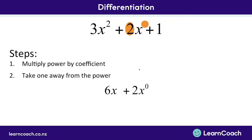Then we take 1 away from the power. Before it was a power of 1, which now becomes the power of 0. Anything to the power of 0 equals 1 — that's just one of those rules in mathematics. So here, x to the power of 0 equals 1, so we can cancel it right out. It doesn't effectively exist.